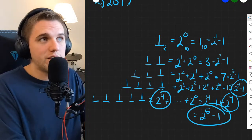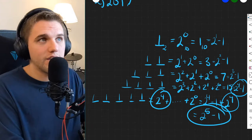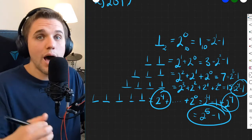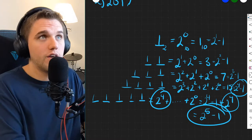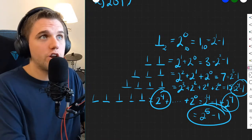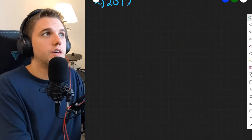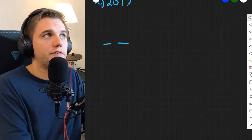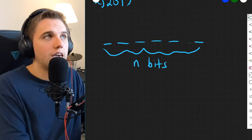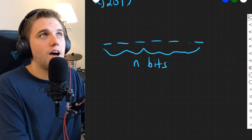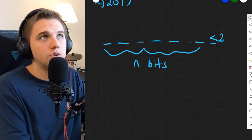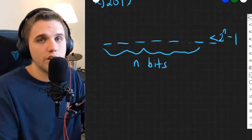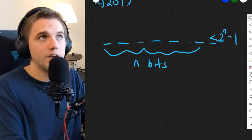So with five bits, we can get up to two to the fifth minus one. In general, if we have n bits, we can get as high as at most two to the n minus one in base 10.